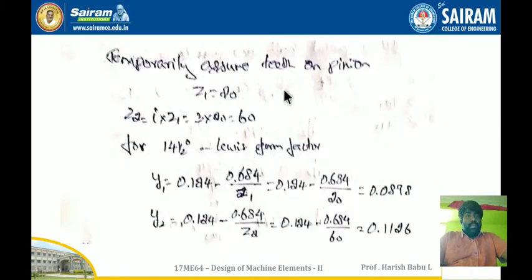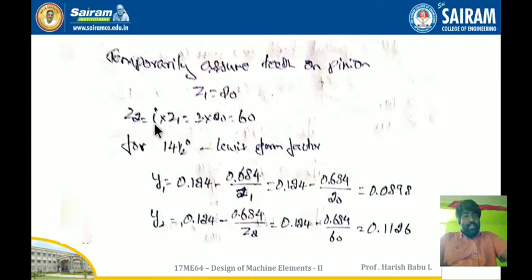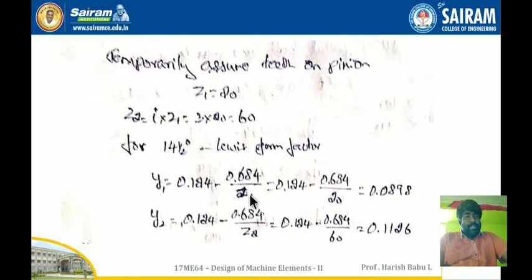Since the diameter is known, I assume the number of teeth on the pinion Z1 = 20 temporarily for calculating the weaker member. Then Z2 = I × Z1 = 3 × 20 = 60. For the 14.5° involute profile, the Lewis form factor is Y = 0.124 − 0.684/Z. For the pinion, Y1 = 0.0898; for the gear, Y2 = 0.1126.